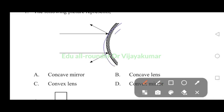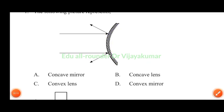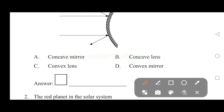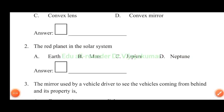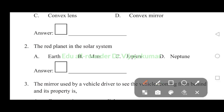The red planet in the solar system: Earth, Mars, Jupiter, Neptune. The red planet in the solar system is Mars. Answer B, Mars.